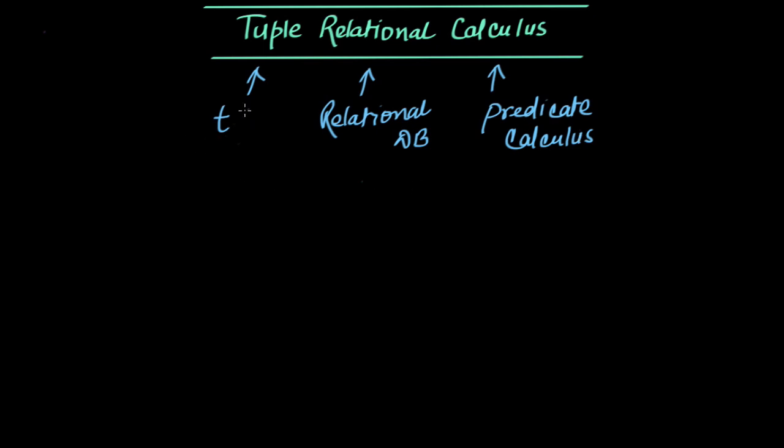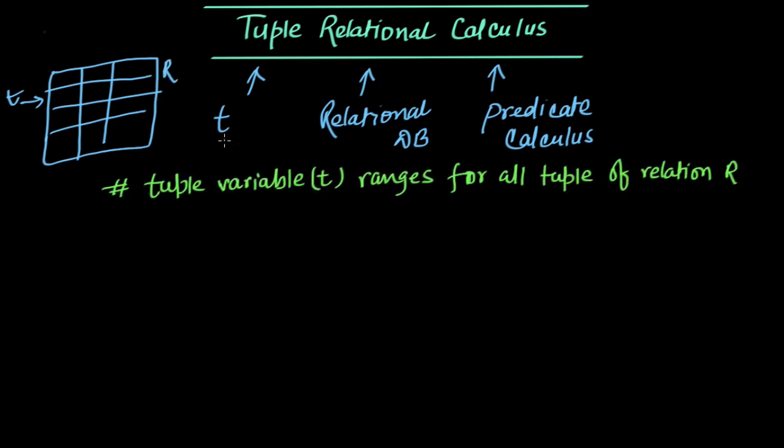Here, this t is a tuple variable. For a relation R, for example we have this relation R, and for this relation R we will have various tuples. So this is one t, and it will range - it will range for all the tuples for this relation R. So t represents each tuple of a relation.